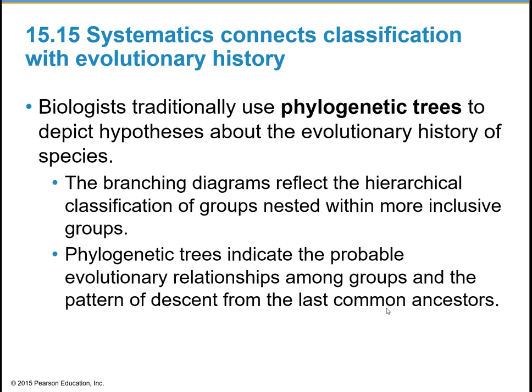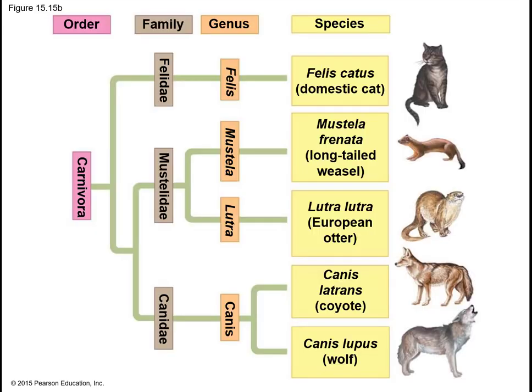Biologists traditionally use phylogenetic trees to depict hypotheses about the evolutionary history of species. The branching diagrams reflect the hierarchical classification of groups nested within more inclusive groups. Phylogenetic trees indicate the probable evolutionary relationships between groups and the pattern of descent from the last common ancestors. This example of a phylogenetic tree can become quite complex, but all branches relate back to that first branch — the Carnivora — which then breaks up into different families: cats, the weasel-otter group, and the canine group.